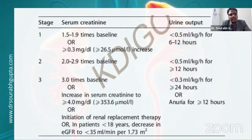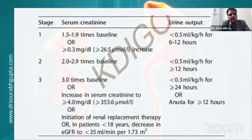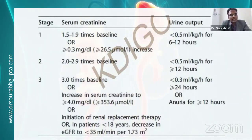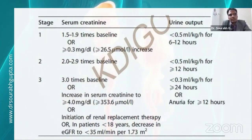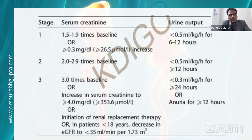The KDIGO staging of AKI: Stage 1 is up to 2 times rise in creatinine; Stage 2 is 2 to 2.9 times rise; Stage 3 is beyond 3 times rise, or an absolute value above 4 except in neonates, or if renal replacement therapy is needed. In pediatric patients under 18, an eGFR below 35 ml is also Stage 3. Based on urine output: below 0.5 ml/kg for 6 hours is Stage 1; lasting 12 hours is Stage 2; below 0.3 ml/kg for 24 hours or anuria for 12 hours is Stage 3.